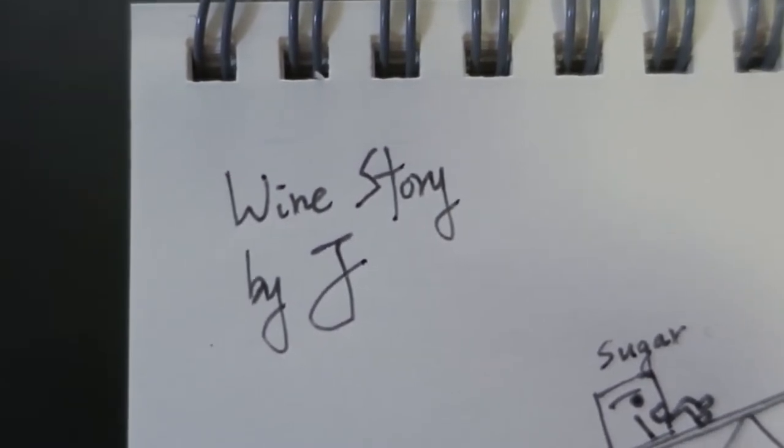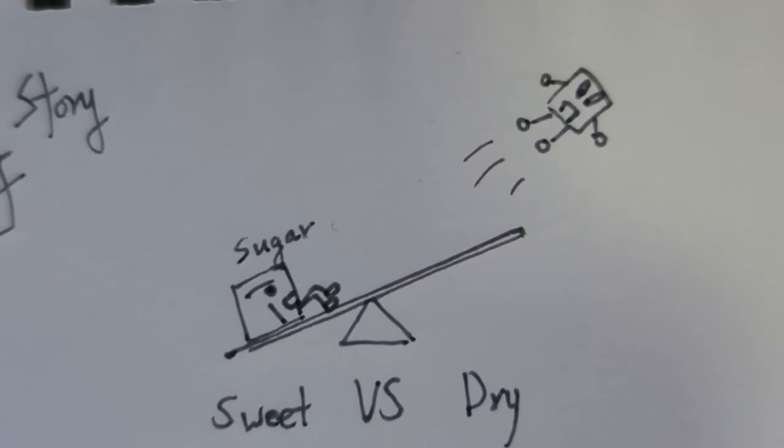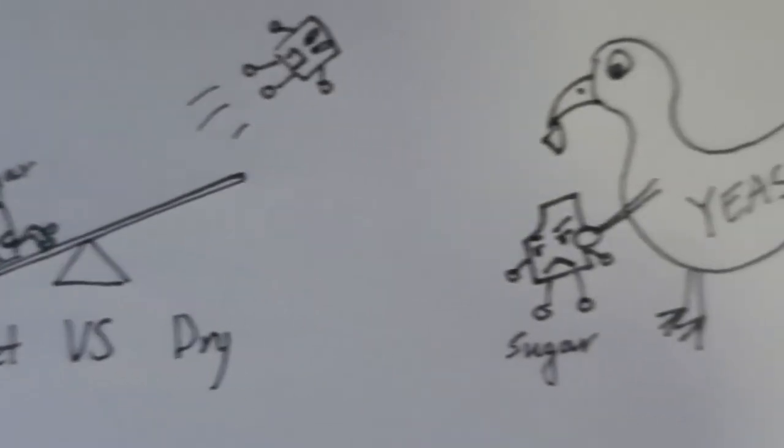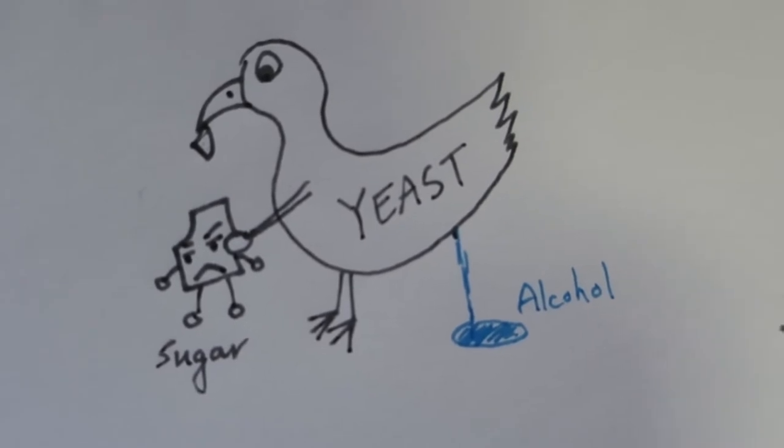Hello everyone, thanks for clicking this video. This is Wine Story and I'm Jay. Today I'm going to explain what makes wine dry or sweet. Simply, it's all about how much yeast eats the sugar and with that sugar how much it produces the alcohol.